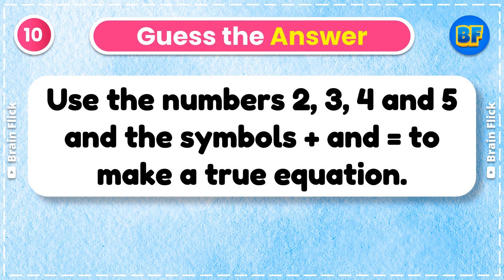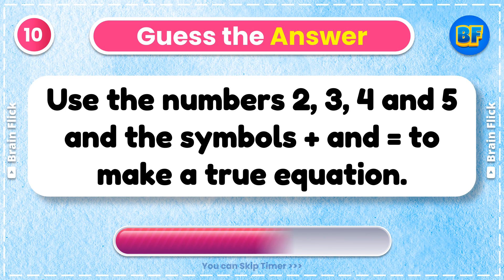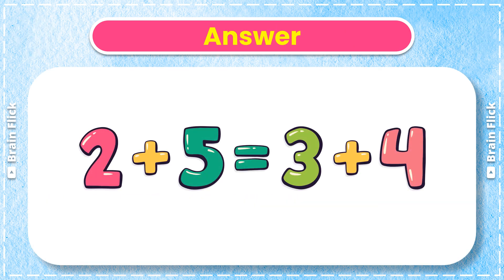Riddle 10. Use the numbers 2, 3, 4, and 5 and the symbols plus and equals to make a true equation. Answer: 2 + 5 = 3 + 4.